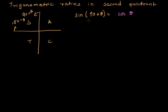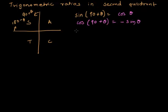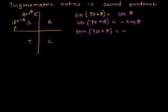Cos of 90 plus theta — cos is negative in the second quadrant, so it becomes minus sine theta. Similarly, tan of 90 plus theta — tan is negative in the second quadrant, and because of this 90, tan gets converted to cot theta.